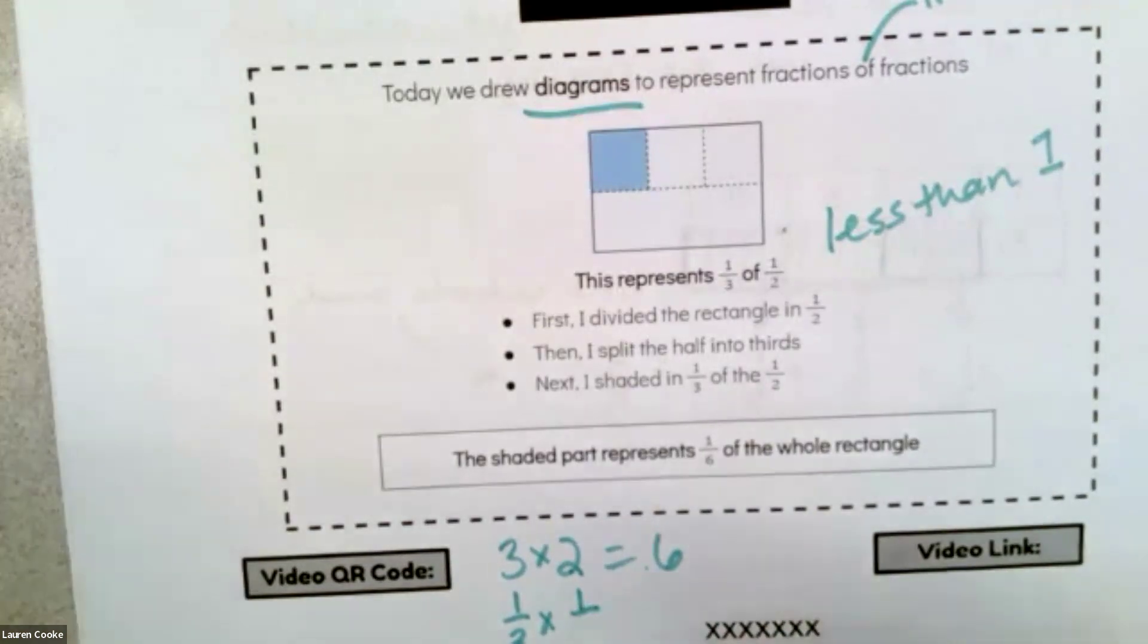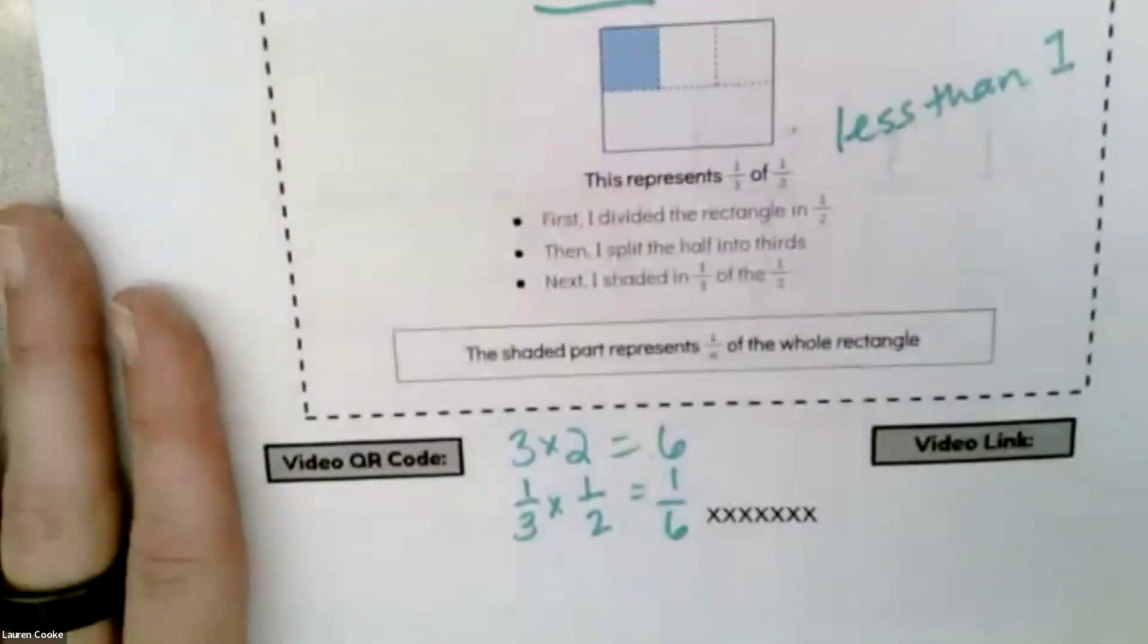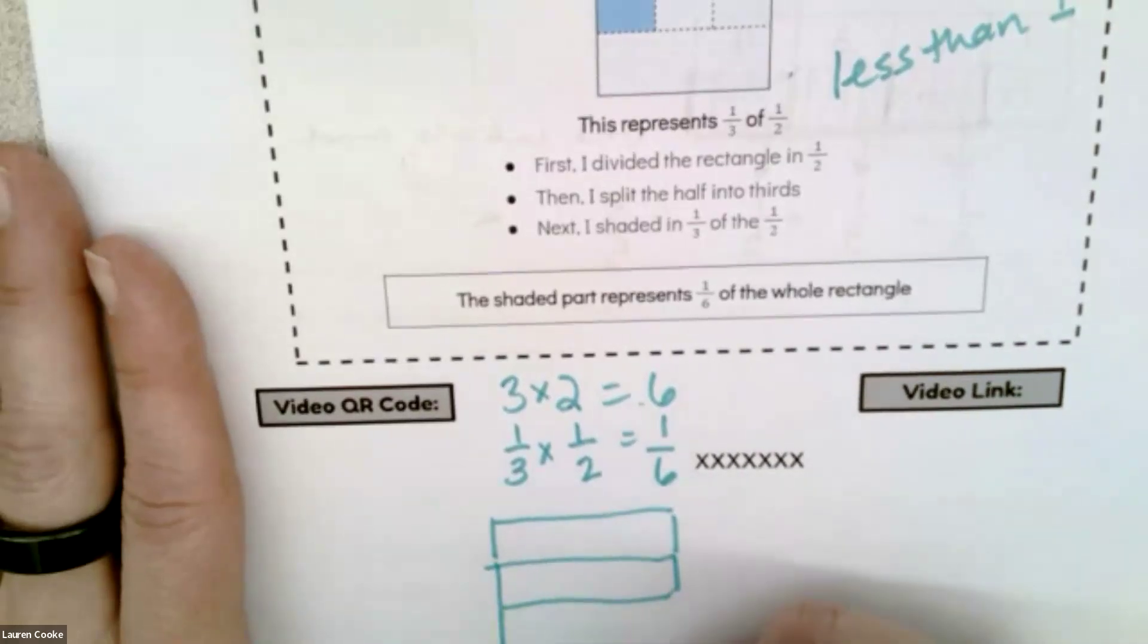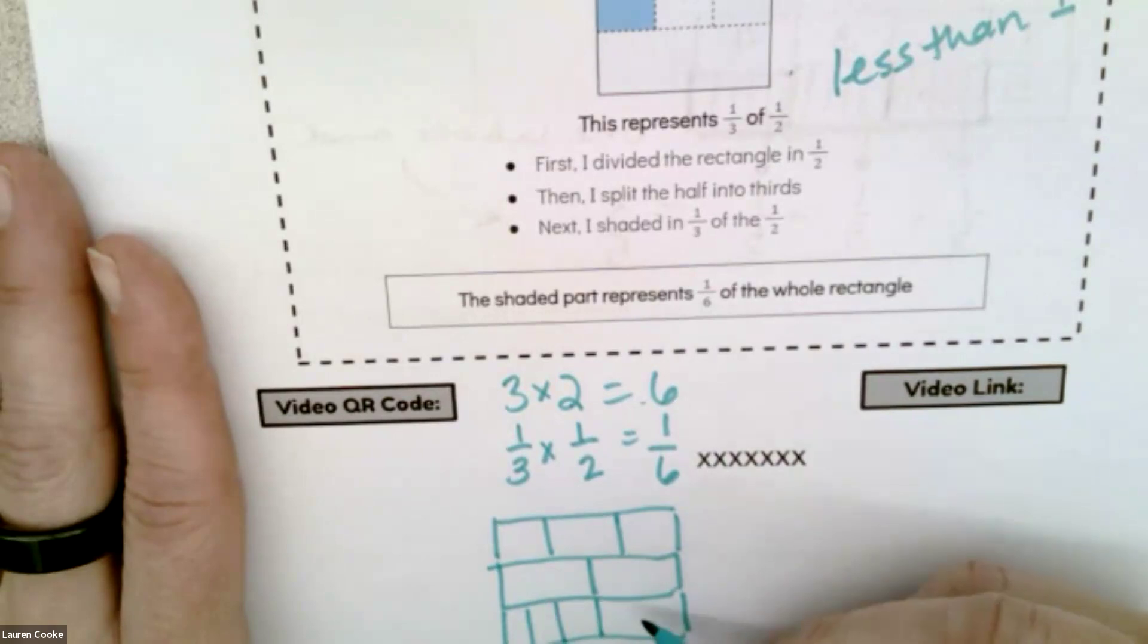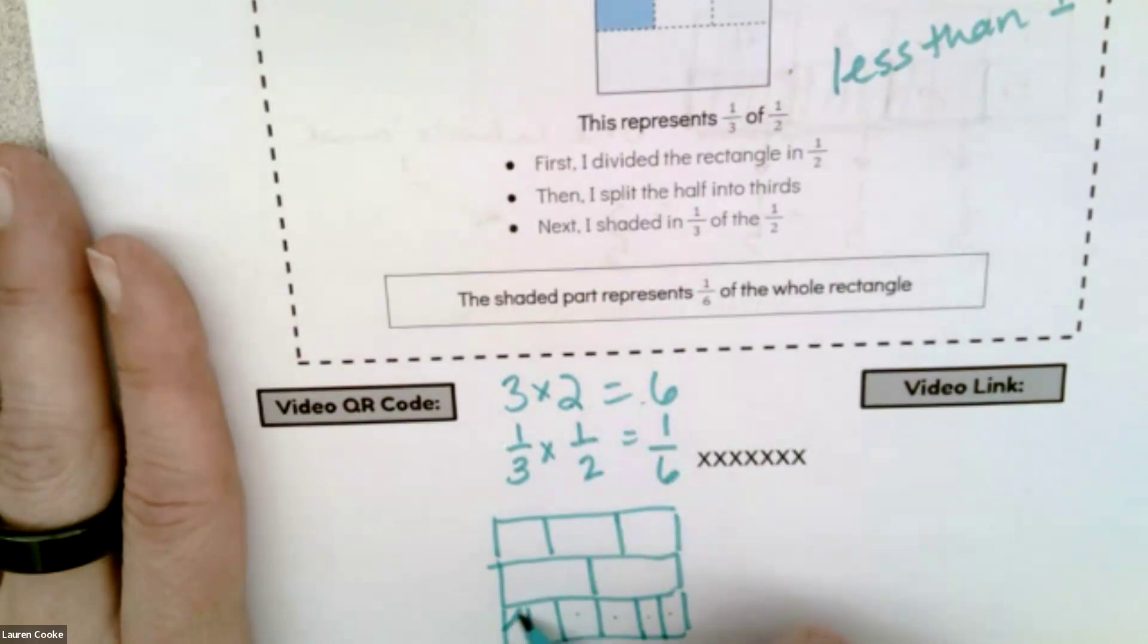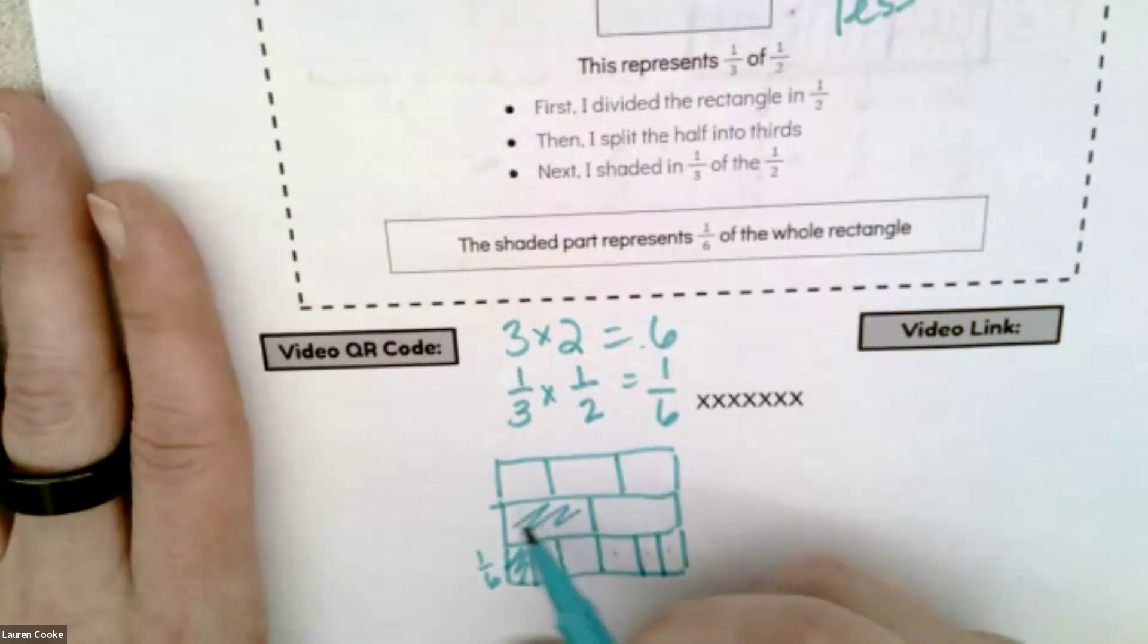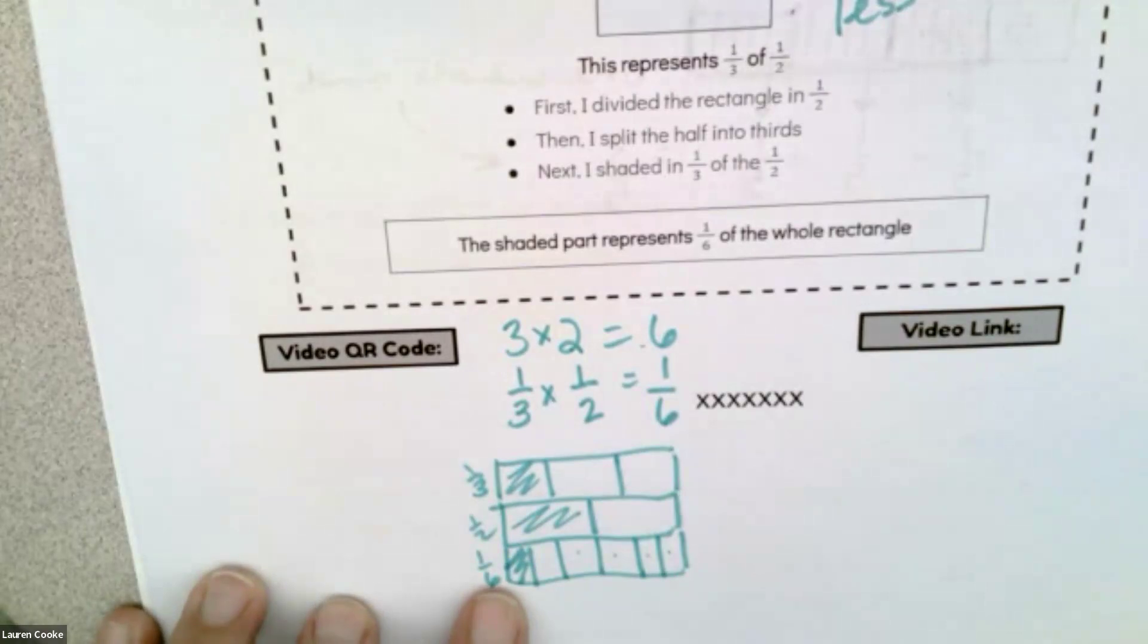But what happens in fractions is because you're taking a part of a part, something's already small and you're taking something smaller, you're going to get 1/6. And 1/6 is absolutely smaller than 1/3 and 1/2. I'll show you: this is thirds, this is a half, and then this is sixths—1, 2, 3. So here's 1/6.